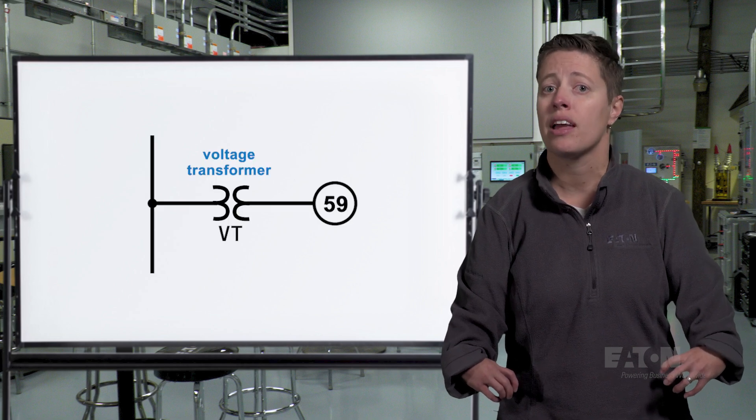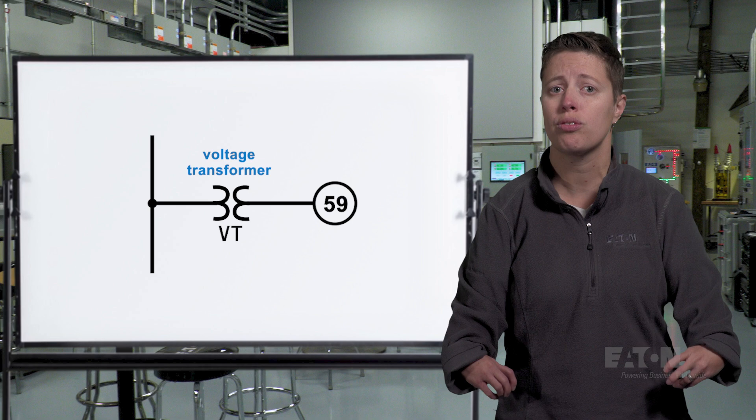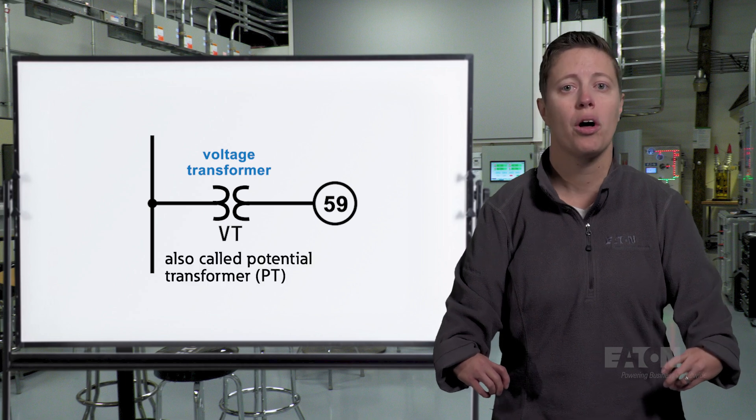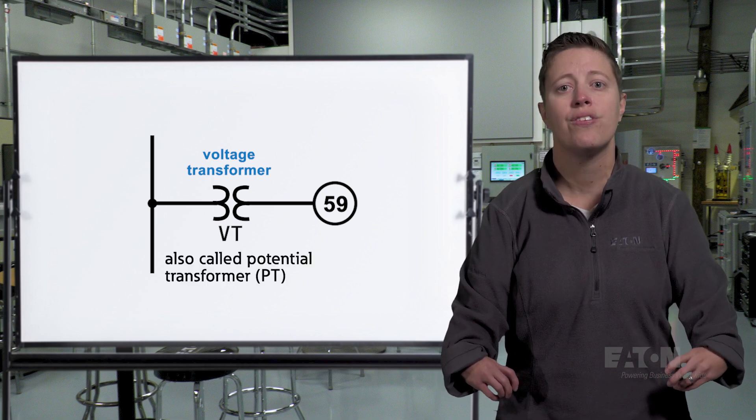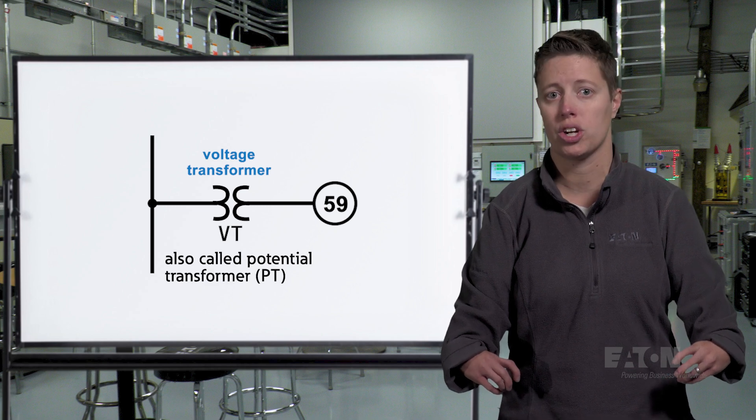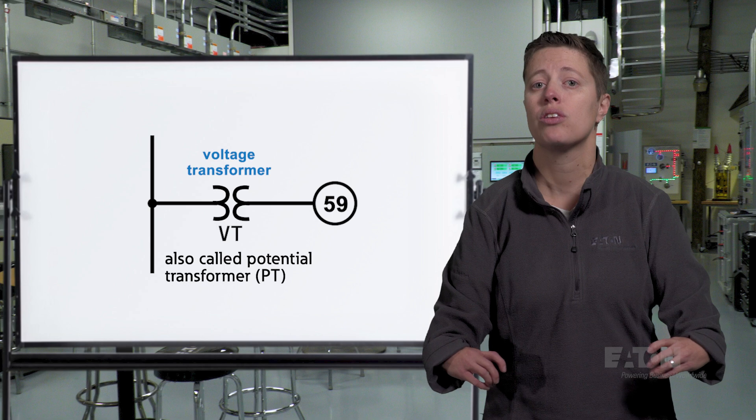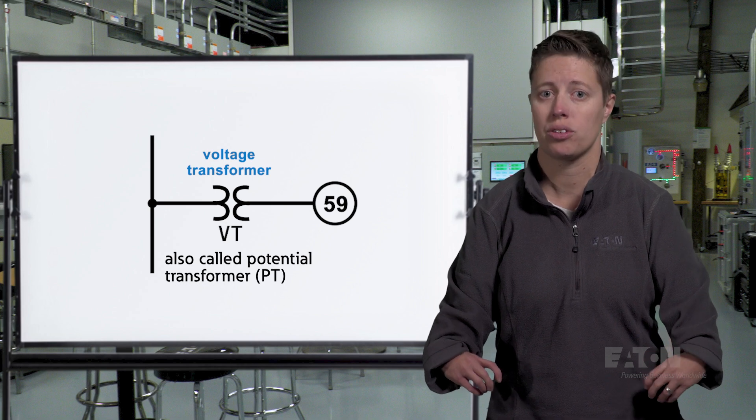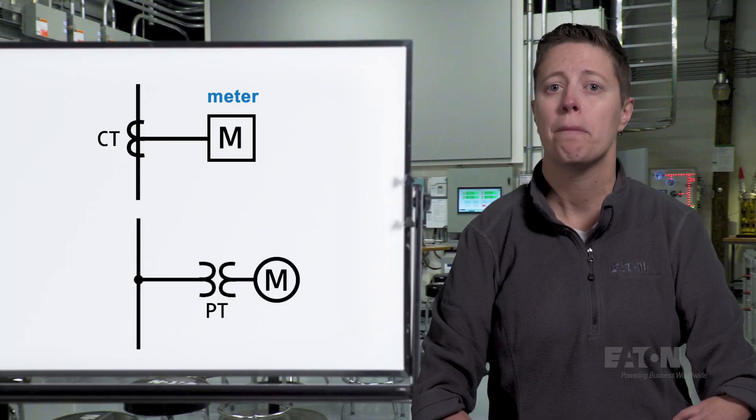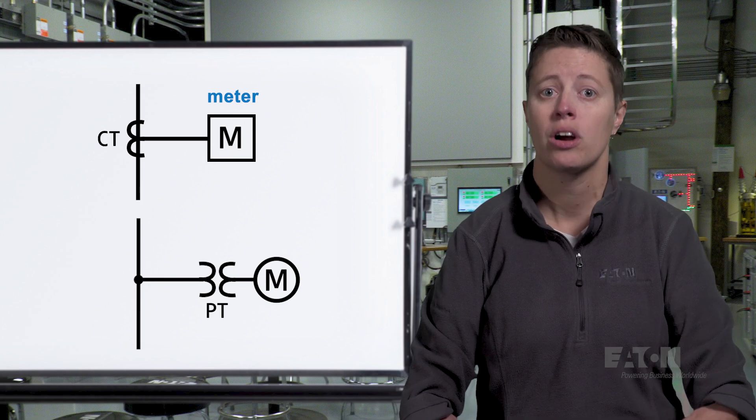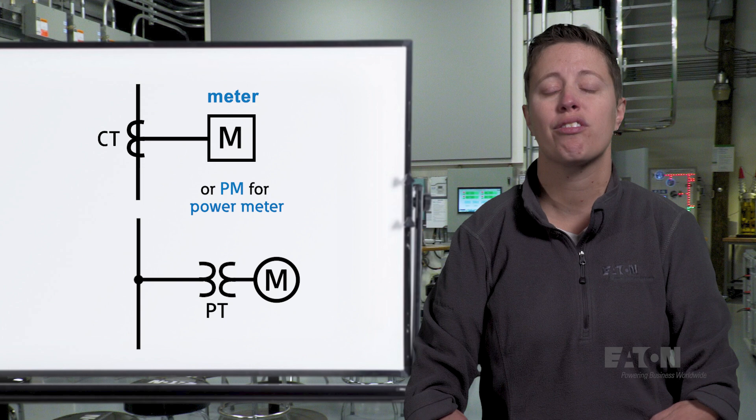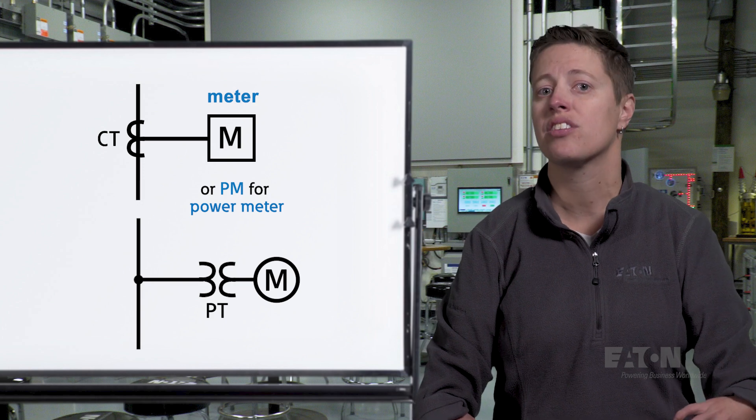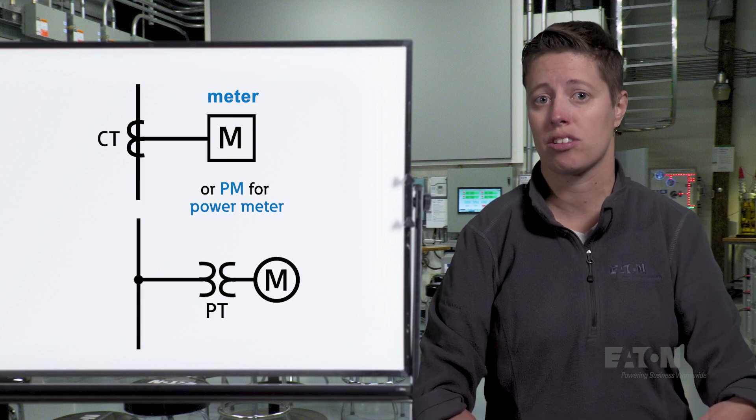Similarly, you may see relays or meters fed by a smaller version of the transformer symbol we discussed earlier. This is a voltage transformer or VT, also called a potential transformer or PT. Its function is like the current transformer but for voltage. The VT takes line voltage and transforms it to a lower voltage to be safely read by devices like protective relays or meters. Speaking of meters, a power meter may be shown with an enclosed M for meter or PM for power meter extending from a CT or PT similar to a protective relay.